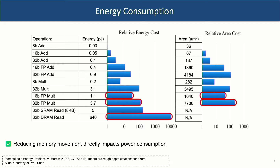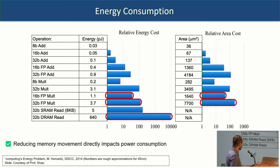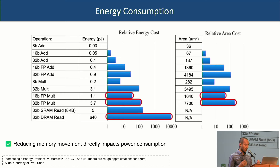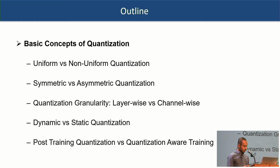Another big factor for quantization is lower power usage. From Professor Horowitz's 2014 paper, the energy cost of performing a 32-bit floating point multiplication is around 3.7 pJ, but performing a 32-bit DRAM read is orders of magnitude more expensive in terms of energy. So quantization is great because it reduces the amount of memory we need to load, which significantly reduces energy consumption.